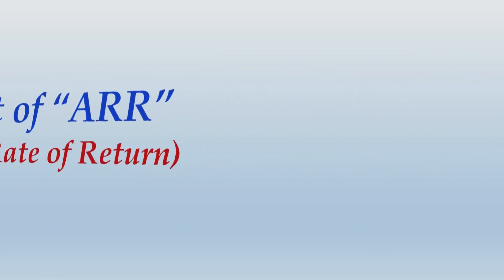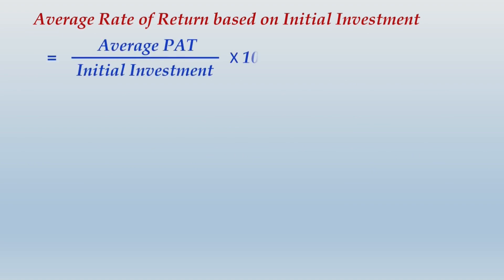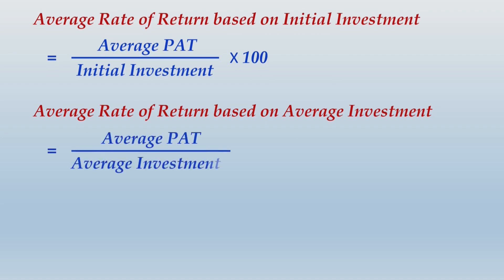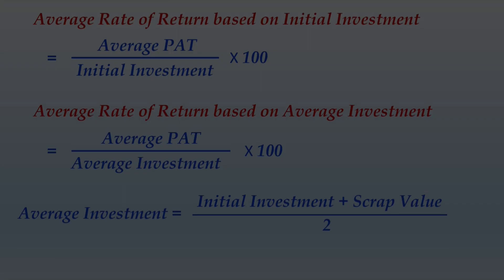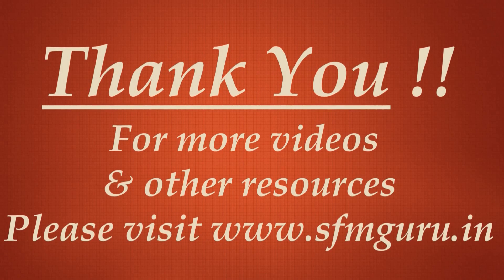The next concept is ARR — average rate of return. This is hardly asked in exams but you cannot skip it. Average rate of return based on initial investment is computed by taking average profit after tax divided by initial investment, multiplied by 100, to get the result as a percentage. If you want to compute average rate of return based on average investment, the numerator remains average profit after tax but the denominator becomes average investment. Average investment is the simple average of initial investment and scrap value: (initial investment + scrap value) ÷ 2.